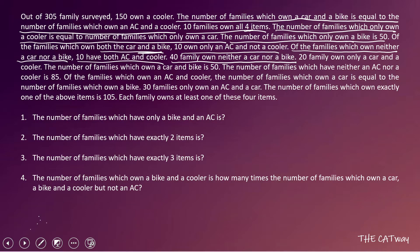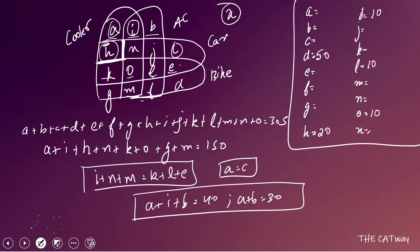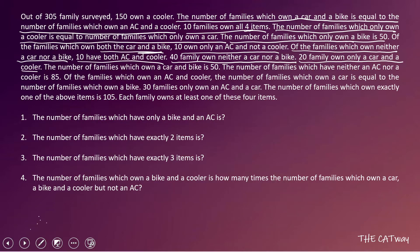20 families own only a car and a cooler. The boundary of AC ends here and the boundary of bike ends here, so this region is H — between cooler and car. Therefore H = 20.